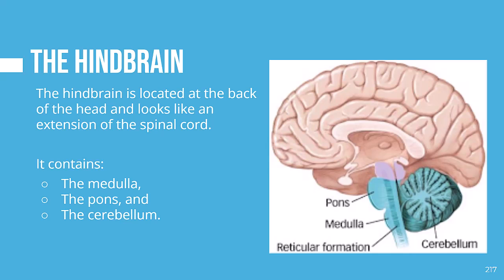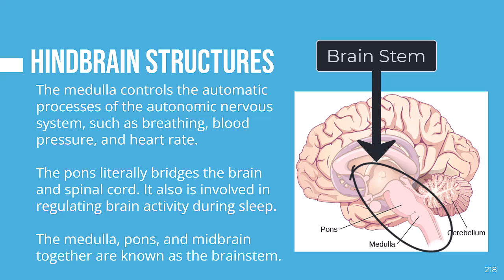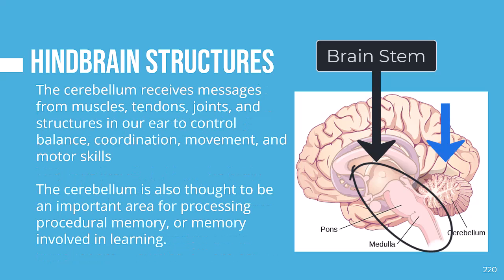The last division of the brain is the hindbrain, located at the back of the head and looking like an extension of the spinal cord. It contains the medulla, the pons, and the cerebellum. The medulla controls automatic processes of the autonomic nervous system such as breathing, blood pressure, and heart rate. The pons — which means bridge — literally bridges the brain and spinal cord and is involved in regulating brain activity during sleep. The medulla, pons, and midbrain together are called the brain stem. The cerebellum, which is Latin for little brain, receives messages from the muscles, tendons, joints, and ear structures to control balance, coordination, movement, and motor skills. The cerebellum is also thought to be important for procedural memory — the learning and remembering of how to perform tasks.